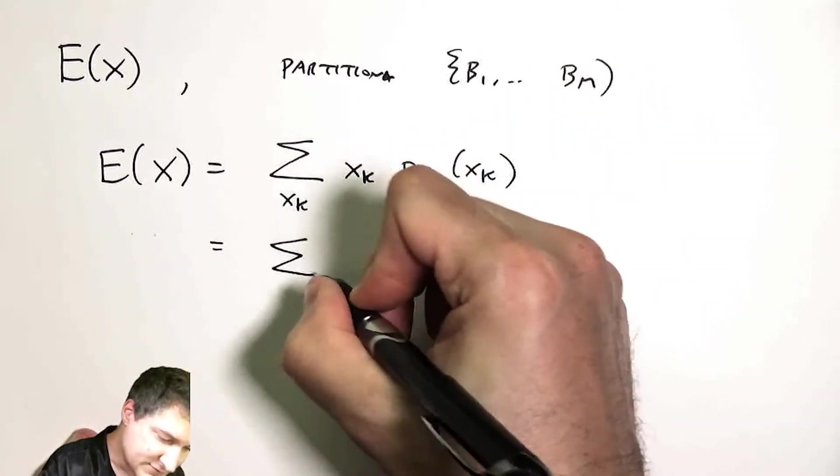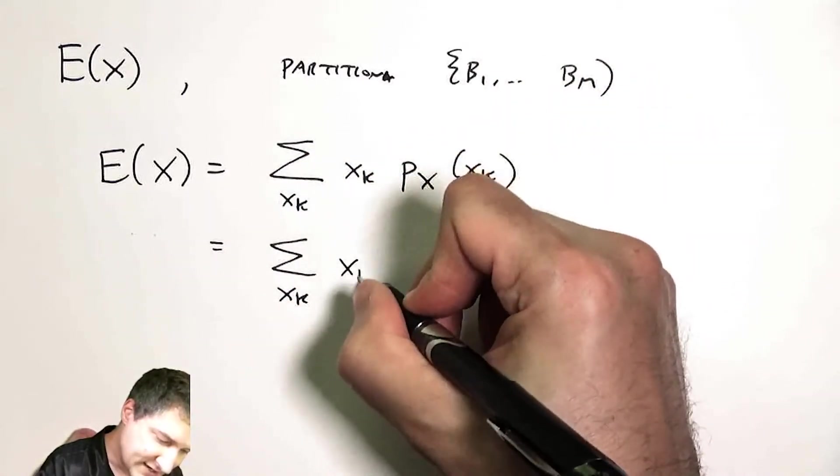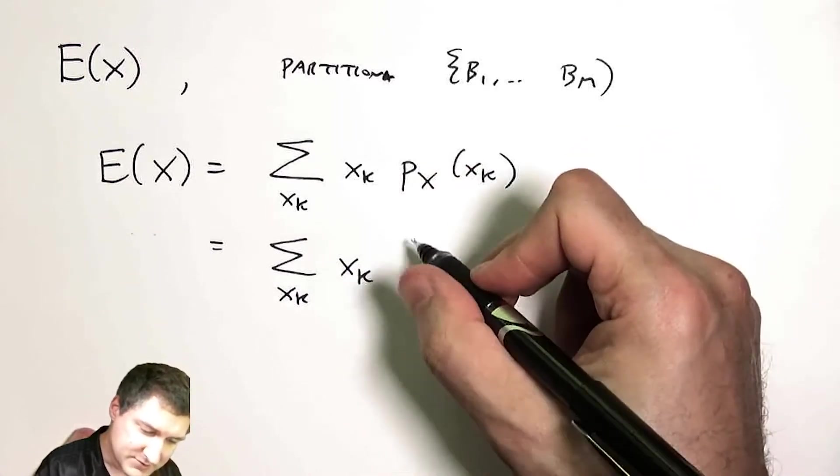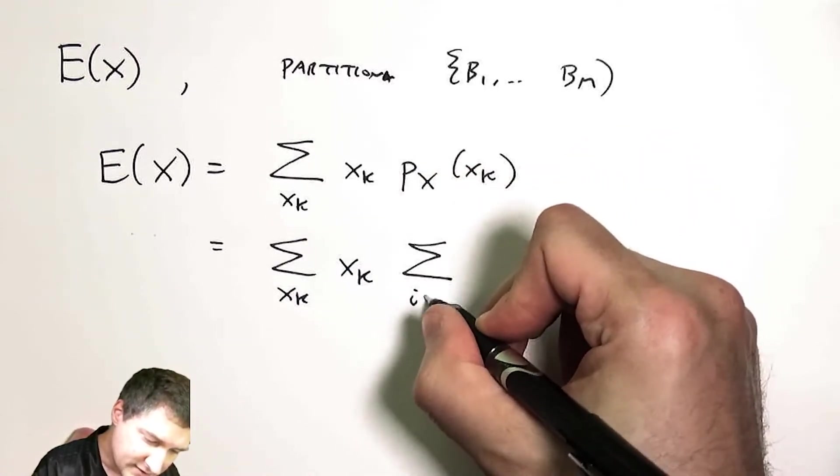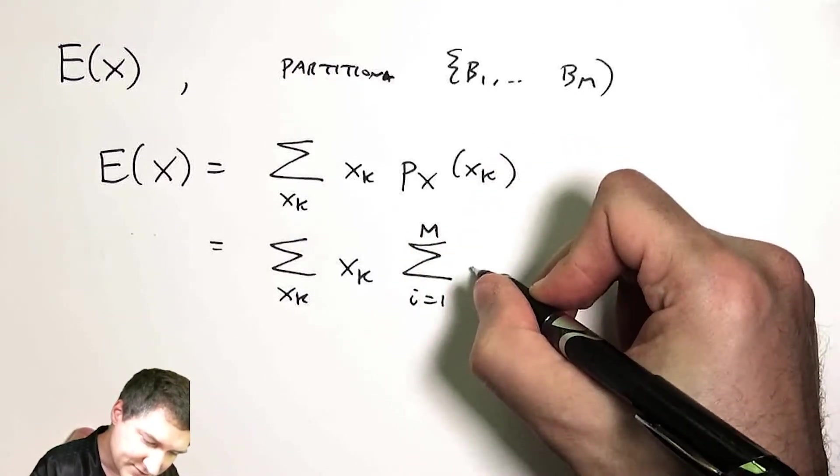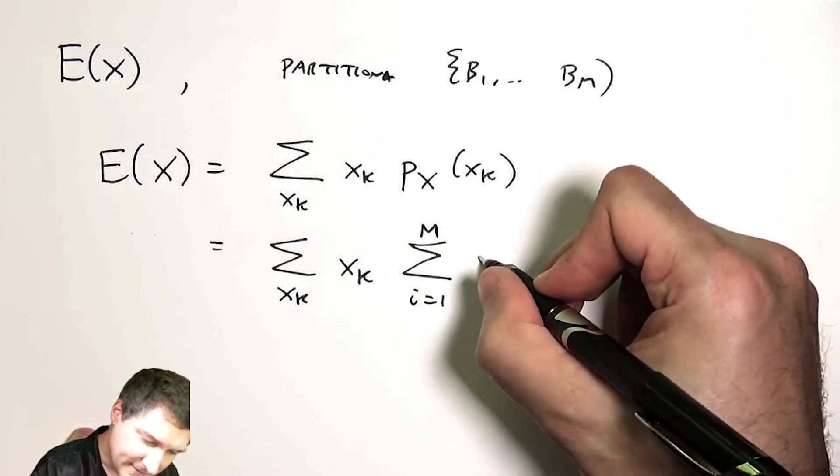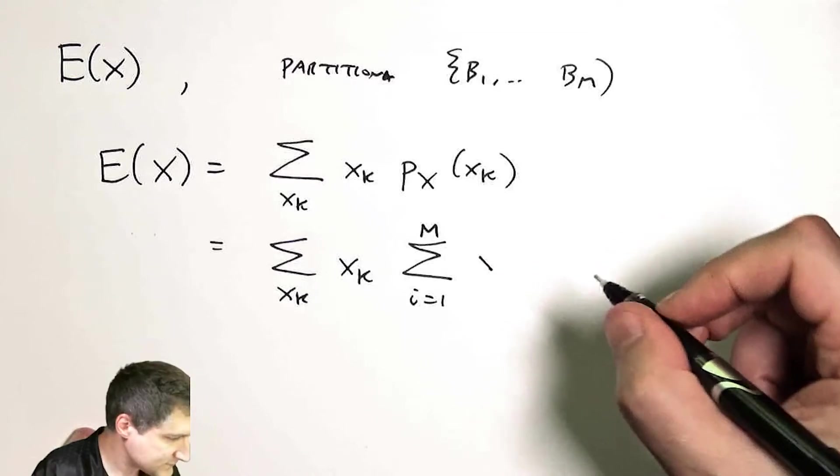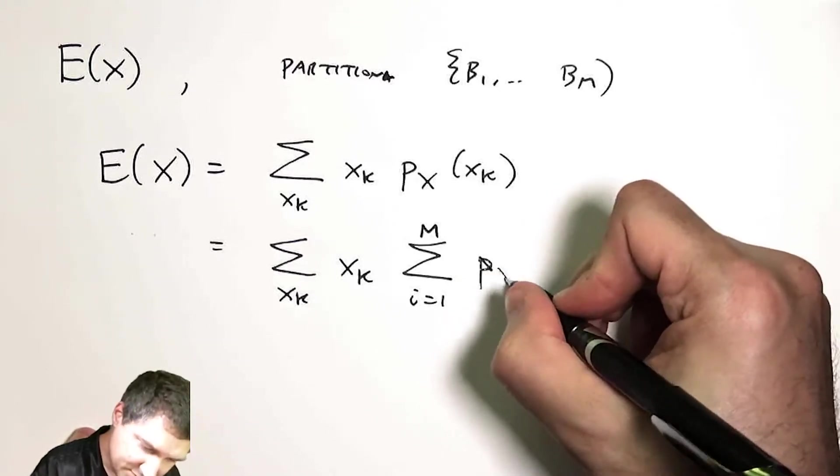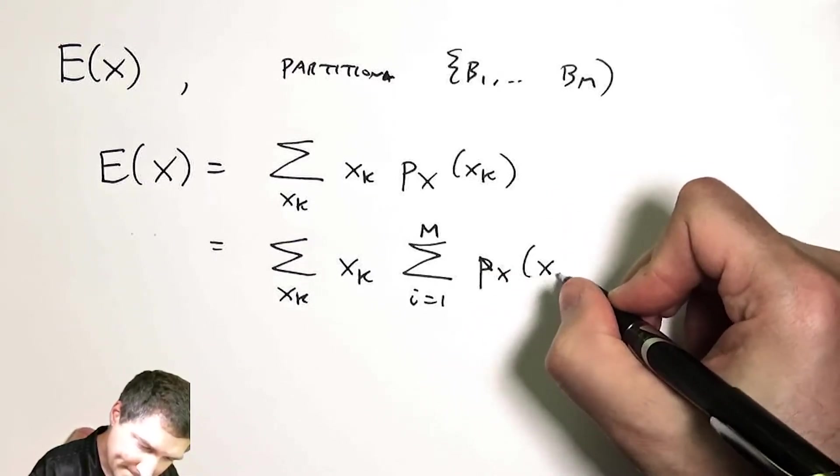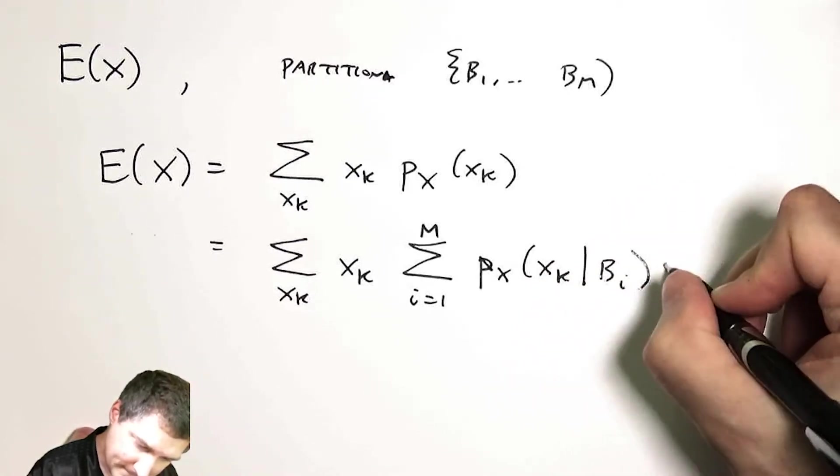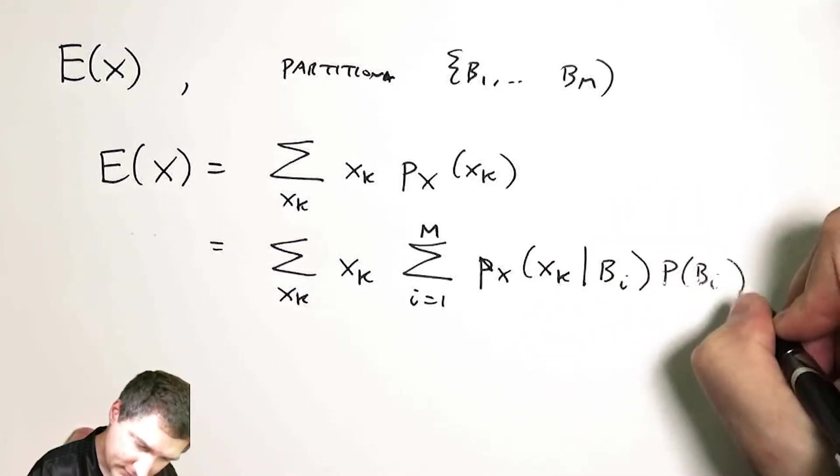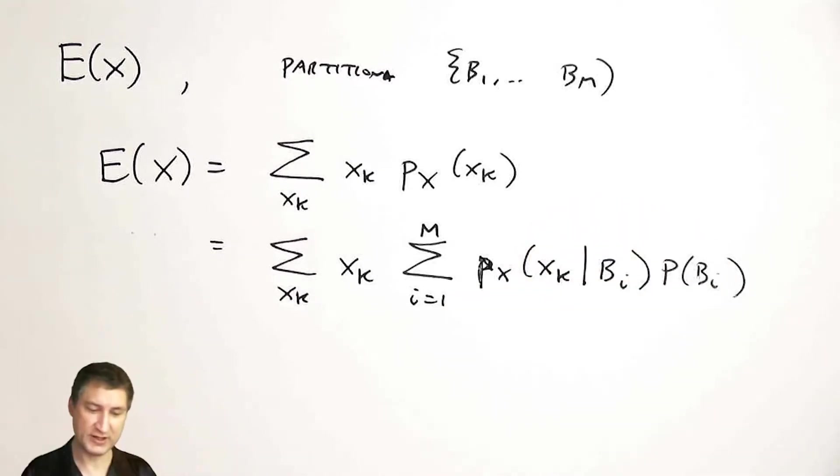And now I'm going to use the law of total probability to say this outcome's probability, I could break it apart into the m partitions of these probabilities. This is just the definition of breaking things apart by a partition.